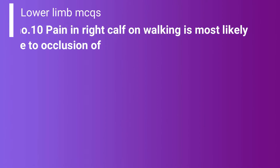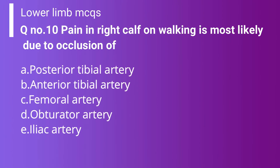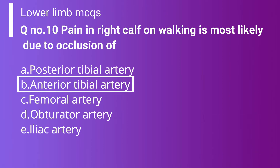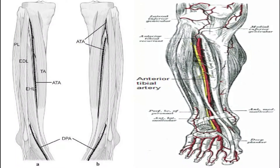Question 10: Pain in the right calf on walking is most likely due to occlusion of which artery? Option A: Posterior tibial artery. Option B: Anterior tibial artery. Option C: Femoral artery. Option D: Obturator artery. Option E: Popliteal artery. The correct answer is Option B — anterior tibial artery — because it supplies the anterior compartment of the leg, but since its origin is from the back of the calf at the level of the popliteus, compression of the calf muscles causes occlusion of the anterior tibial artery, causing pain while walking.